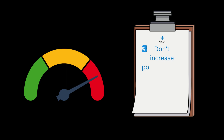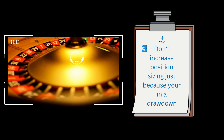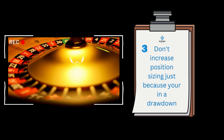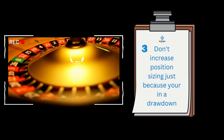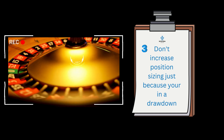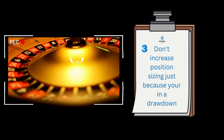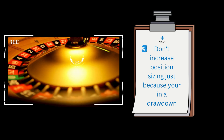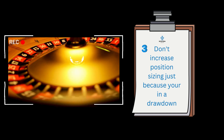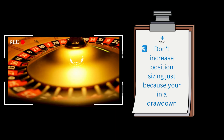Number three: do not increase position sizing just because you're in a drawdown. Similar to a game of roulette — whatever red, black, or the numbers — we don't know what order and what sequence they're going to come in. Yes, we can apply a strategy to make a percentage gain long term, but the sequence we don't know about. Sometimes people think they can increase the position size because they're on a bit of a losing streak, but we don't know how long that losing streak will go on for. Over-risking and increasing the position size while on a losing streak could only dig yourself in a deeper hole. This is exactly why we say stick to the same position sizing, keep the risk low, and keep everything consistent.